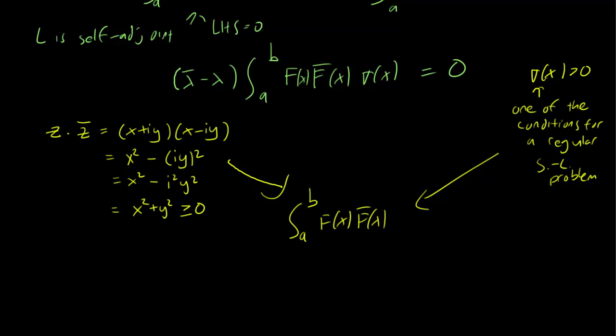But these two facts imply that the integral of F(x) F bar(x) sigma(x) from A to B, remember this is positive because you're multiplying a complex number by its conjugate, must actually be greater than 0. In fact, it has to be strictly greater than 0 because the only way to get x squared plus y squared equal to 0 is if both x and y were 0, and F is clearly not 0. So this is strictly greater than 0. But the only way to get this equation equal to 0 then is if lambda bar minus lambda equals 0, or lambda bar equals lambda.